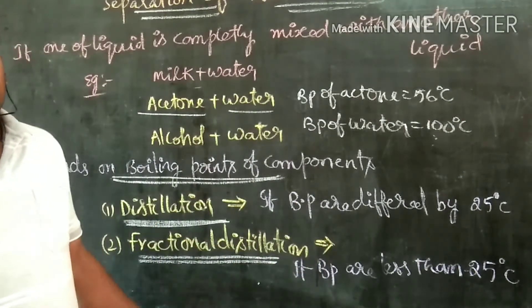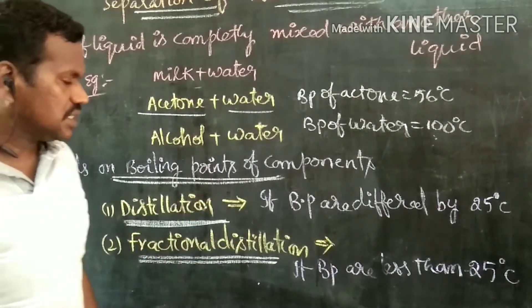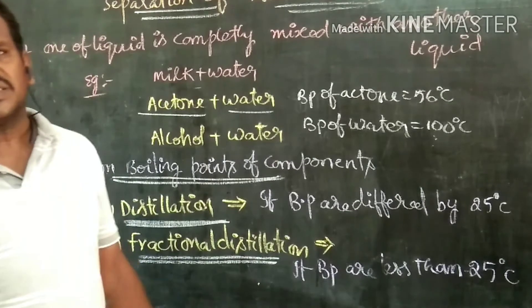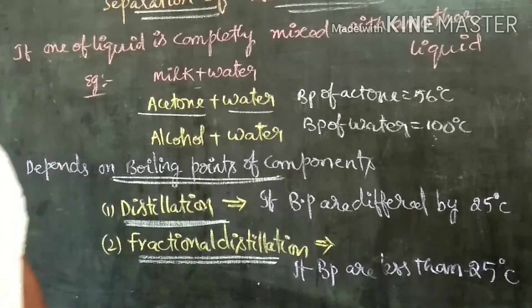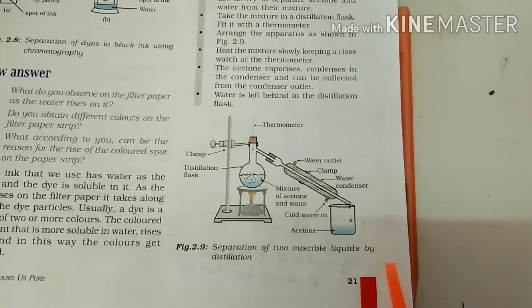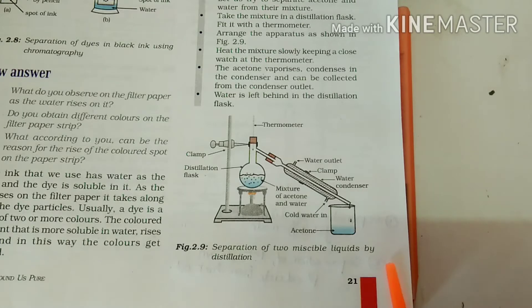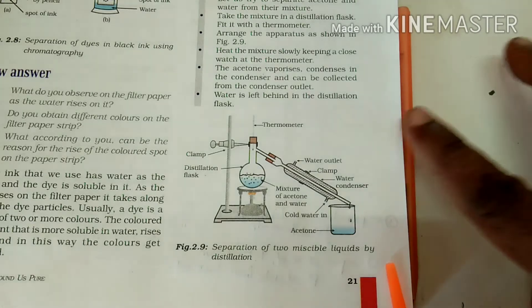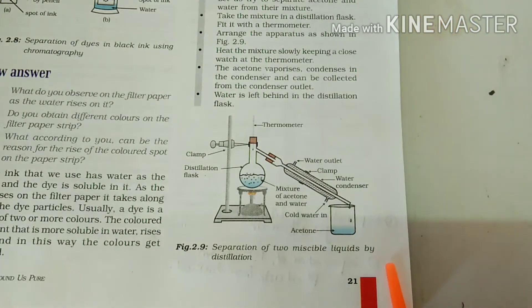Let us discuss the method of distillation and the method of fractional distillation clearly. Separation of miscible liquids with boiling point difference greater than 25 degrees Celsius is done by using the distillation method. This is the experimental setup in the distillation method.